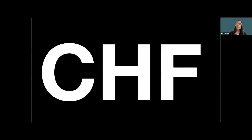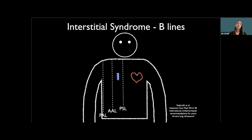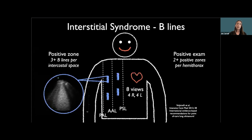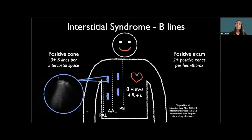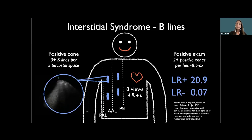CHF is one thing, but decompensated CHF — really acutely decompensated — is another. How do I figure out if someone's drowning in their own fluid? You put the probe on the chest and look for B lines: vertical bright white lines coming down from the pleural line. If you're seeing those in multiple areas bilaterally — diffuse — that is an excellent test for acute decompensated heart failure. If you don't see them, you need to look for another explanation.